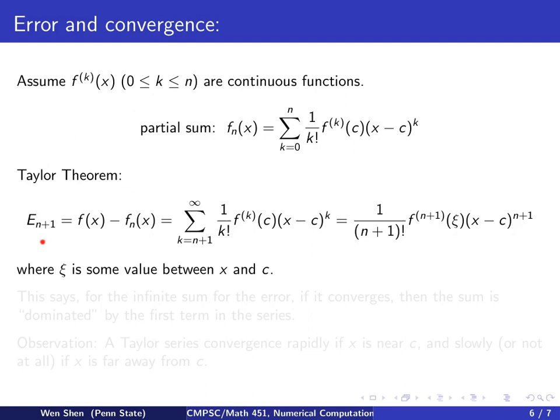What is the error of this partial sum? The error E_{n+1} using n+1 partial sum is f(x) minus your partial sum. If we write this into series, we're taking the first n+1 terms in the Taylor series and truncating there, throwing away all the rest, which is infinitely many terms. So this is still a series, starting from k=n+1, going to infinity.